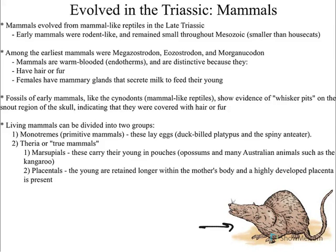Mammals are easy to identify because they are warm-blooded. They definitely have hair or fur, and the females have active mammary glands that secrete milk to feed babies.